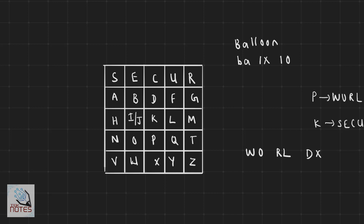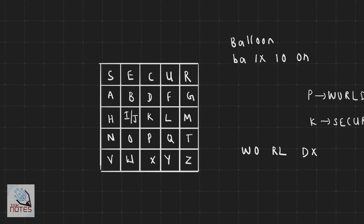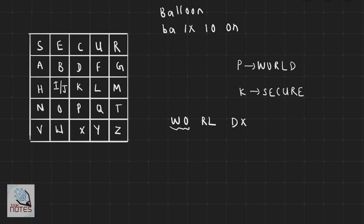We divide the plain text into pairs such as W-O, R-L, and so on. We then check whether the two letters in each pair fall in the same row or same column of the matrix, or whether they form a rectangle.